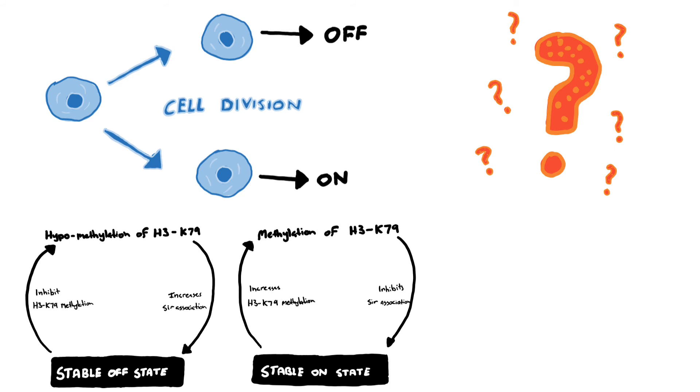This mechanism allows genetically identical cells to exist in stable, expressed or silent states, explaining why methylation of H3K79 restricts CERB proteins to heterochromatic regions.